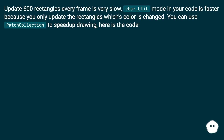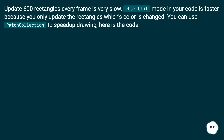Updating 600 rectangles every frame is very slow. The bar_blit_mode in your code is faster because you only update the rectangles whose color has changed. You can use PatchCollection to speed up drawing. Here is the code.